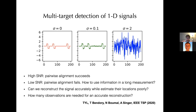We ask the important question: are we able to reconstruct the signal accurately without even trying to figure out the individual locations, since those are just nuisance variables? We only want an accurate estimate of the short signals. We also want to know, at high noise levels, how many observations are needed — in other words, how the sample complexity scales with the noise level.